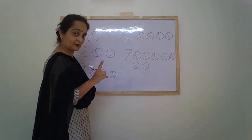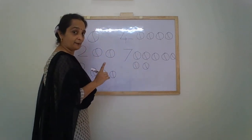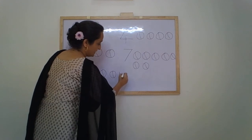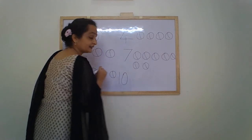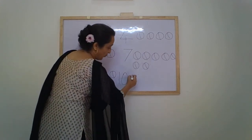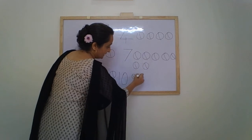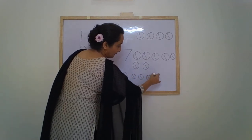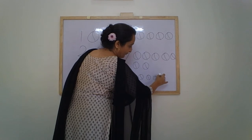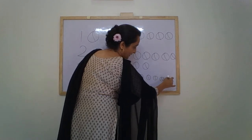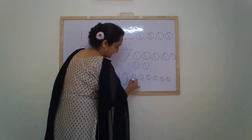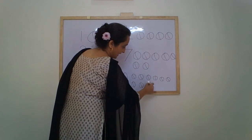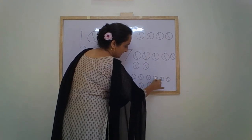And the last number is number 10. 1, 0 — 10. 1, 2, 3, 4, 5, 6, 7, 8, 9, 10.